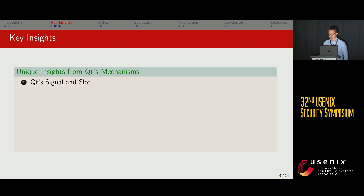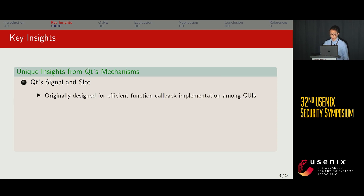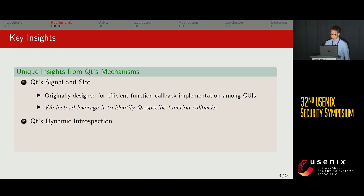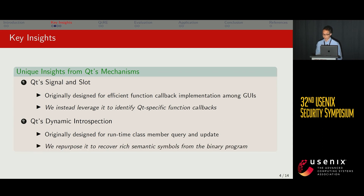We found two unique mechanisms from Qt that can help resolve these two challenges. The first insight comes from the signal and slot mechanism in Qt, originally designed for efficient function callback implementations among GUIs. We can leverage this to identify Qt-specific function callbacks to help generate a more complete control flow graph. The second insight comes from dynamic introspection in Qt, a mechanism for runtime class memory query and update, which we can repurpose to recover rich semantic symbols from a Qt binary program.